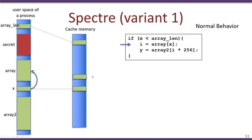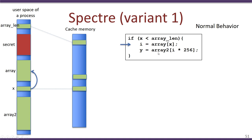This data is loaded into cache and into a register denoted as i. Next, this value i is used to index into array2, causing one block of data from array2 to be loaded into cache memory. Typically, if x is less than array_len, at the end of execution we have array_len, x, the block corresponding to i, and the block corresponding to y all present in the cache. This is the normal behavior when x is indeed less than array_len.